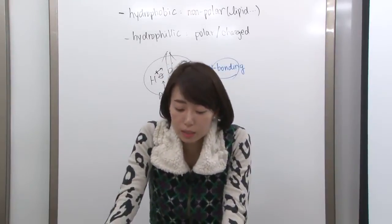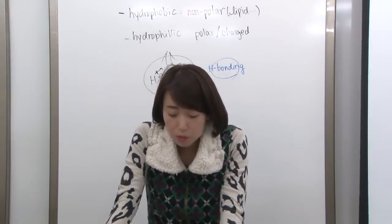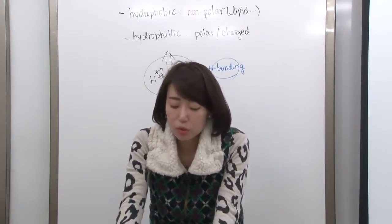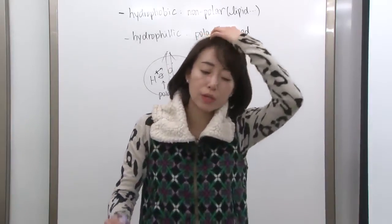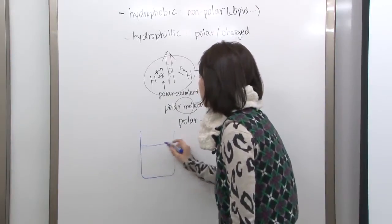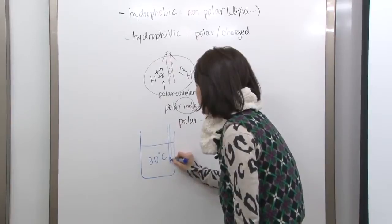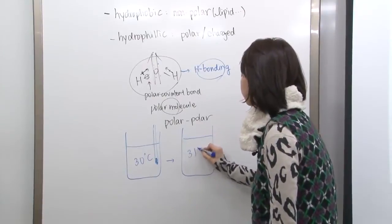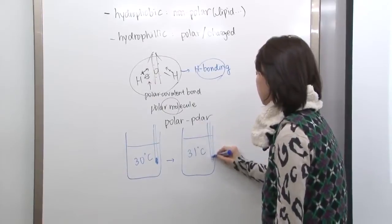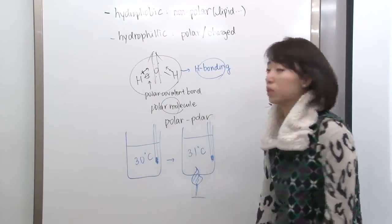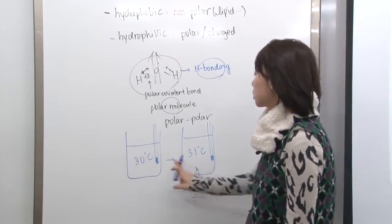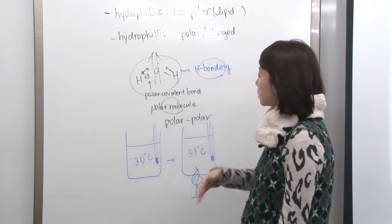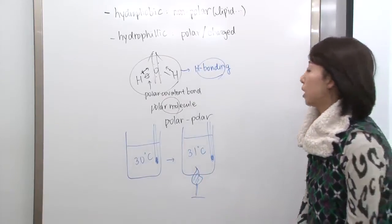Number one: water has a high specific heat. By definition, specific heat is the amount of heat that must be absorbed for one gram of a substance to change temperature by one degree Celsius. So if you have a sample of water at 30°C and you want to heat it to 31°C, you have to apply heat — that amount of energy needed is the specific heat.